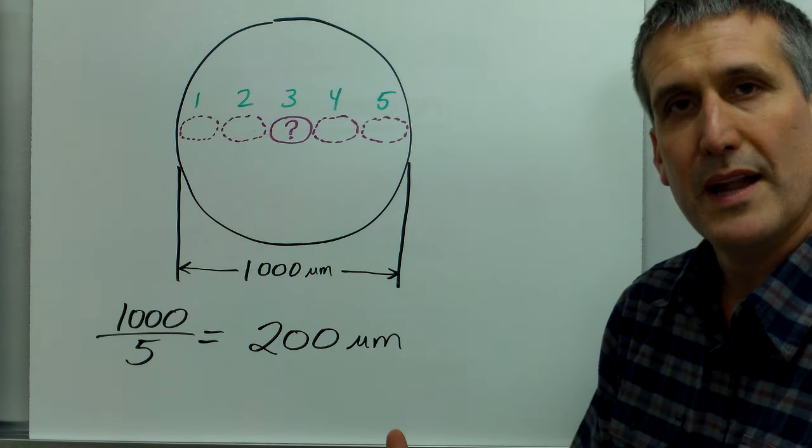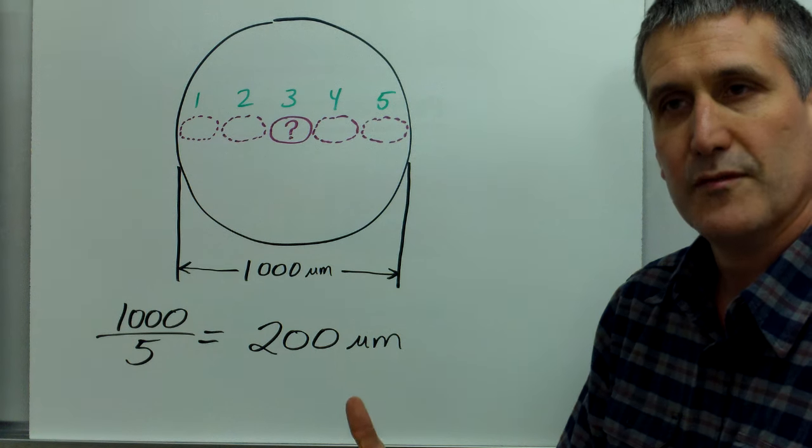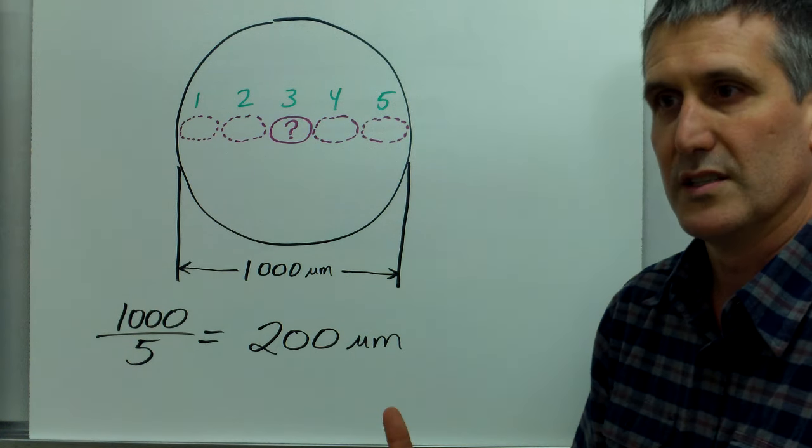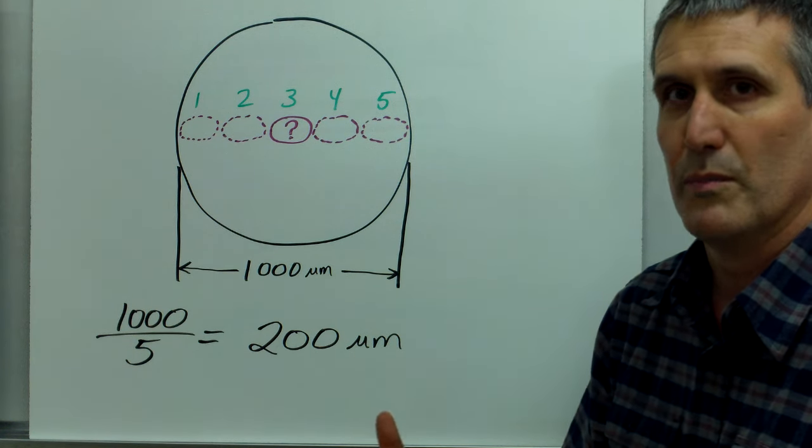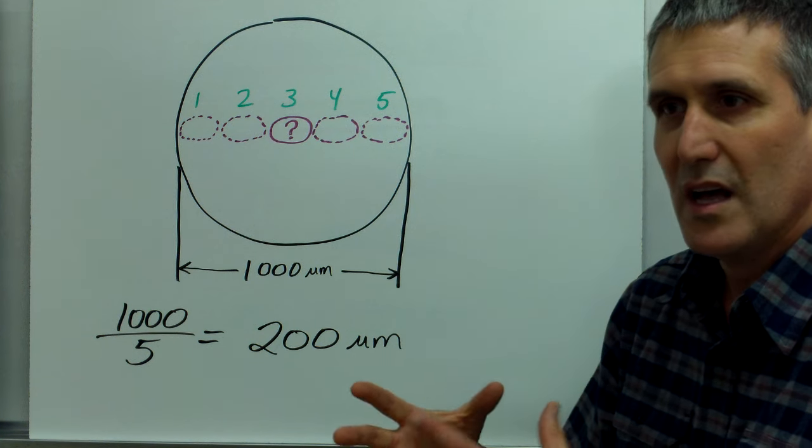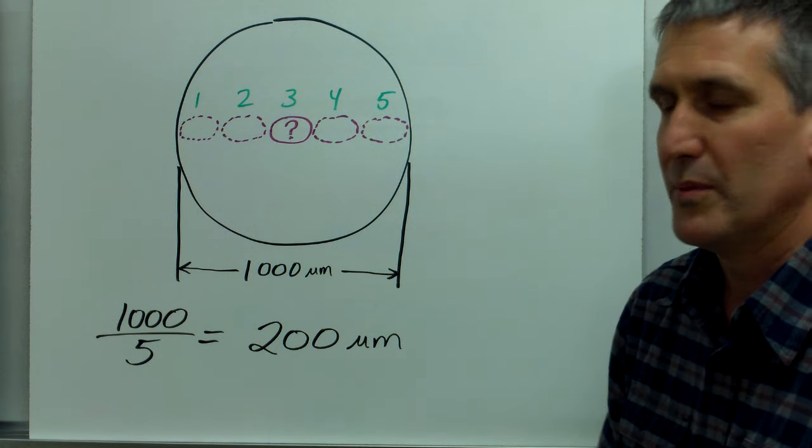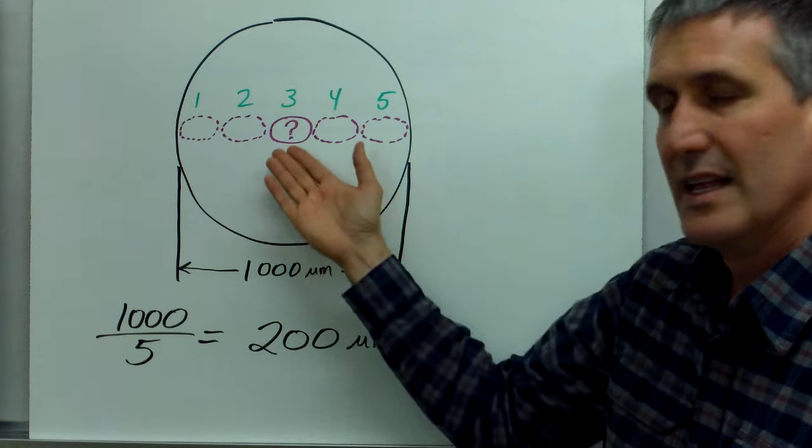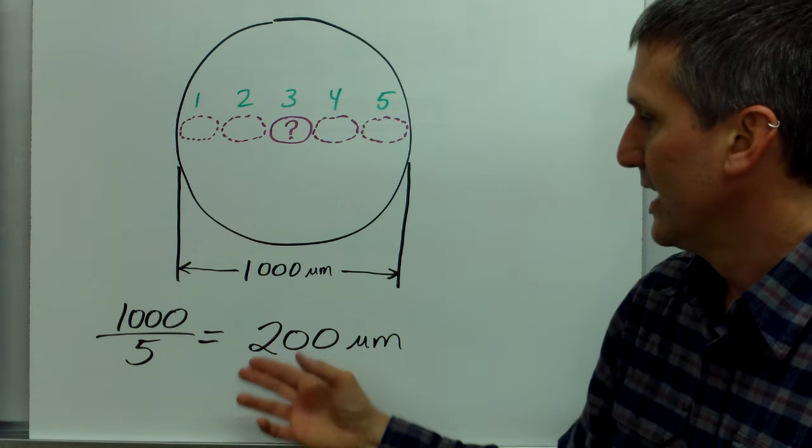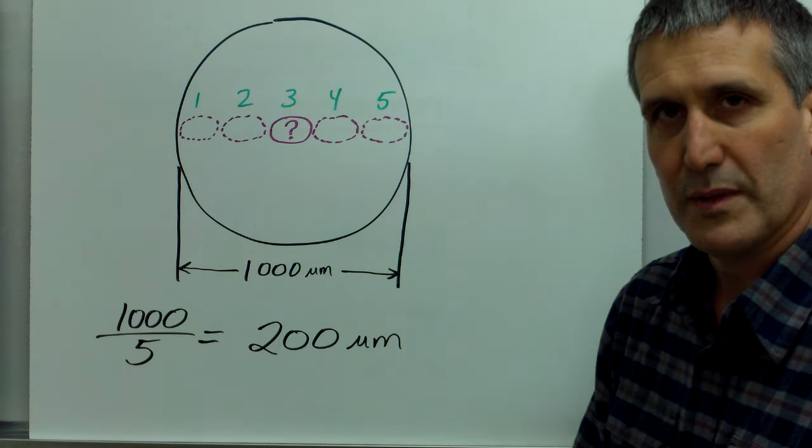And that gives you a much better observation than saying it was really small. I mean I was using a microscope and it was small, I couldn't see it without the microscope. Now you can say the cell that I was looking at is approximately 200 micrometers long.